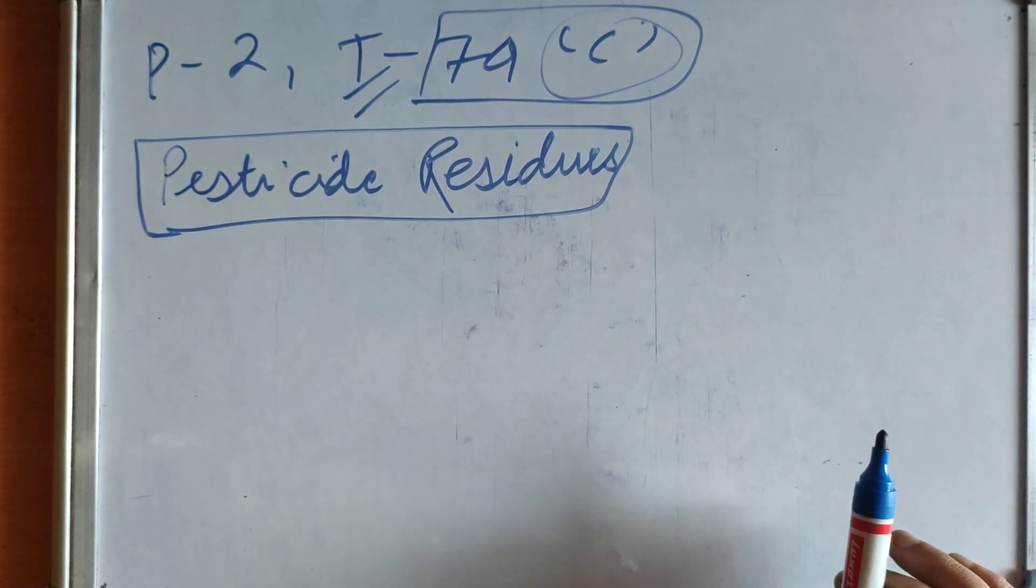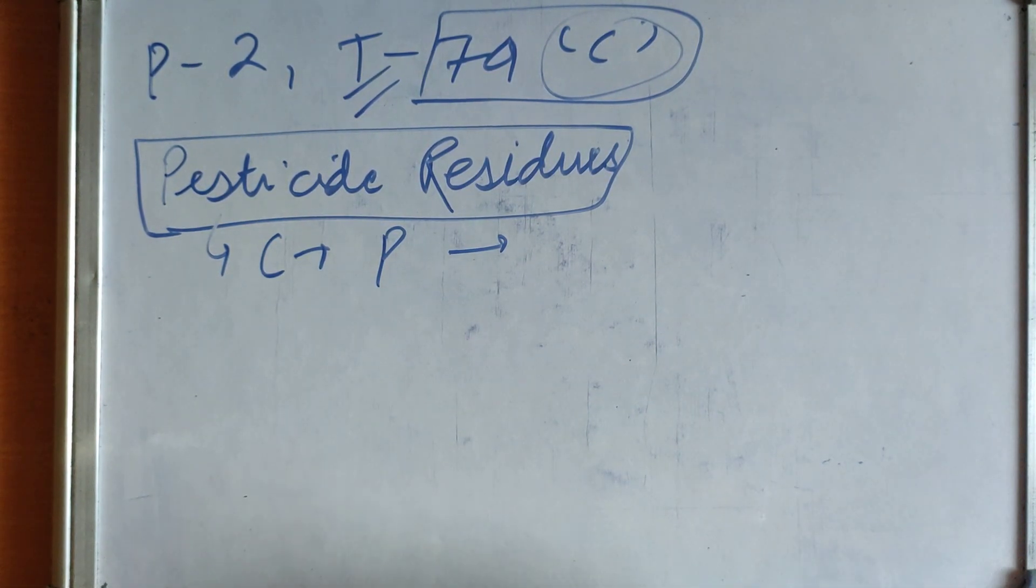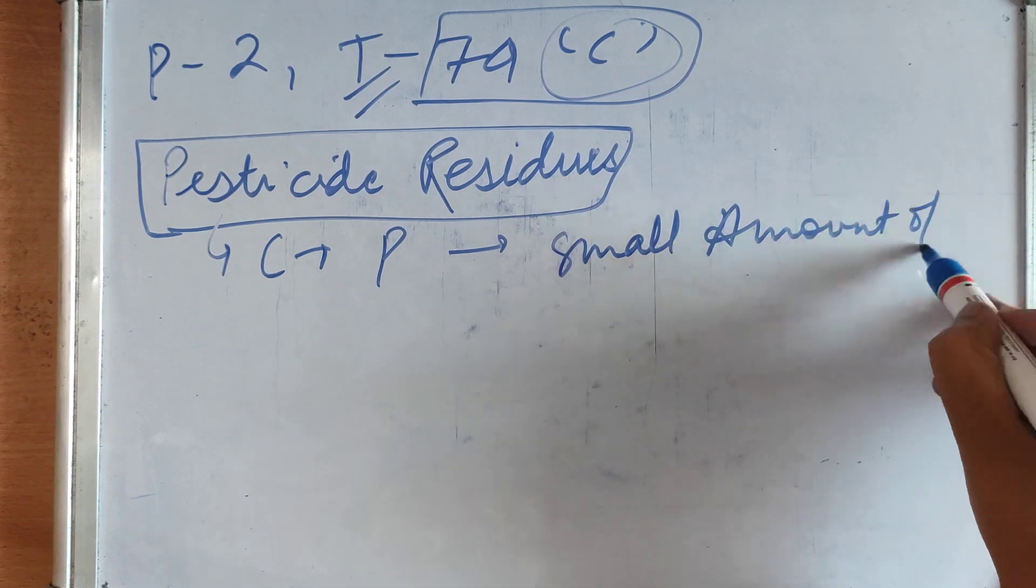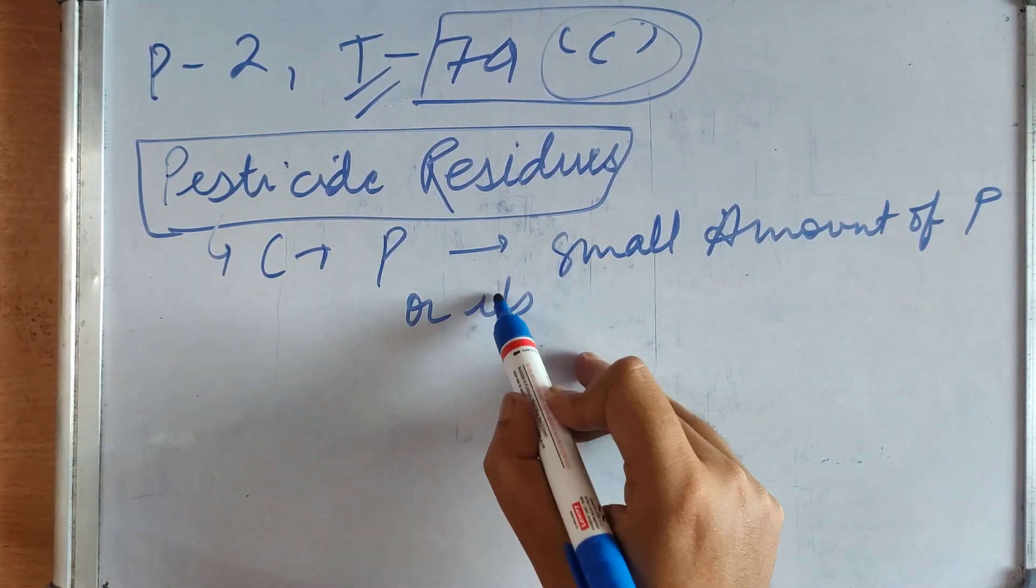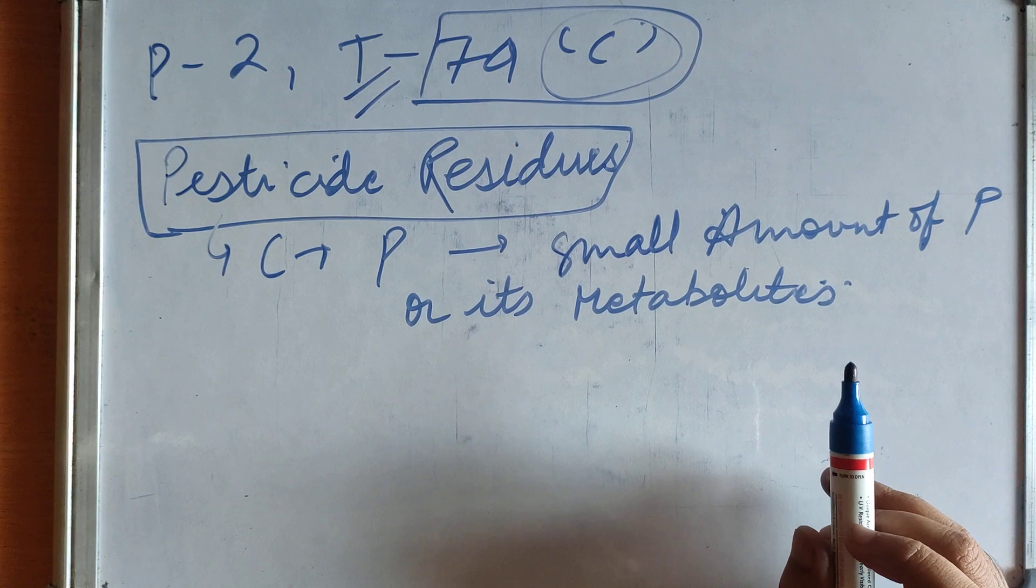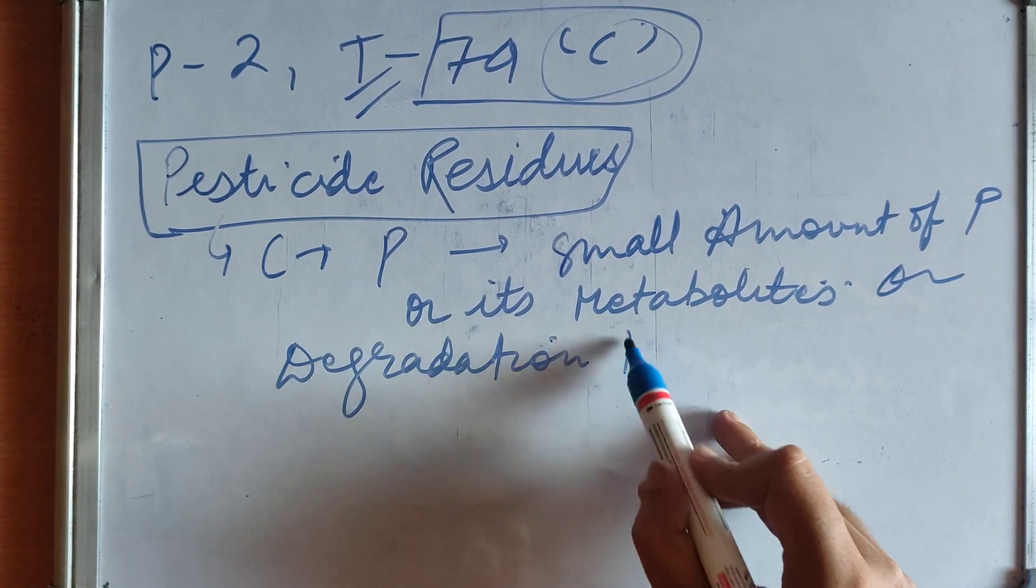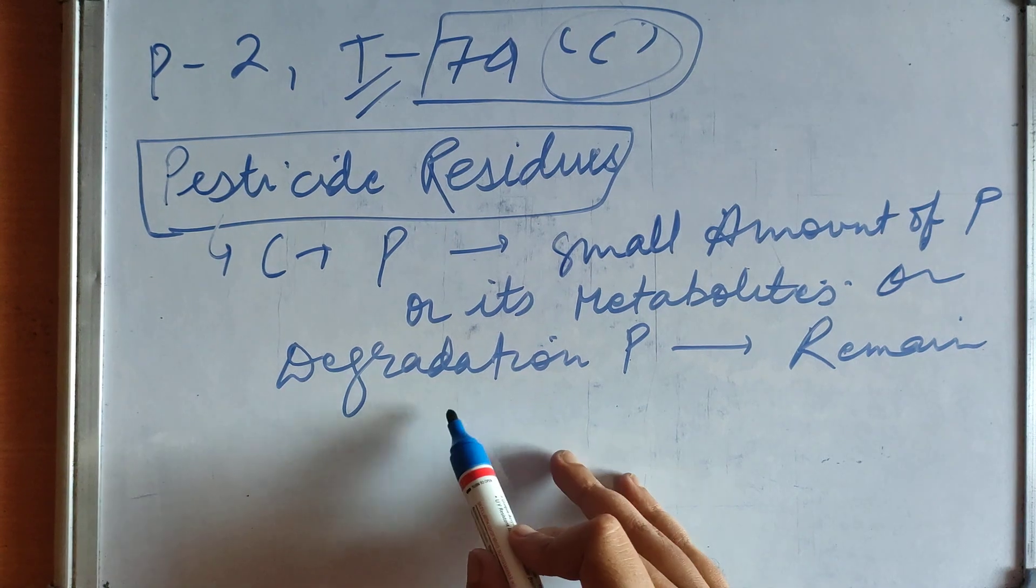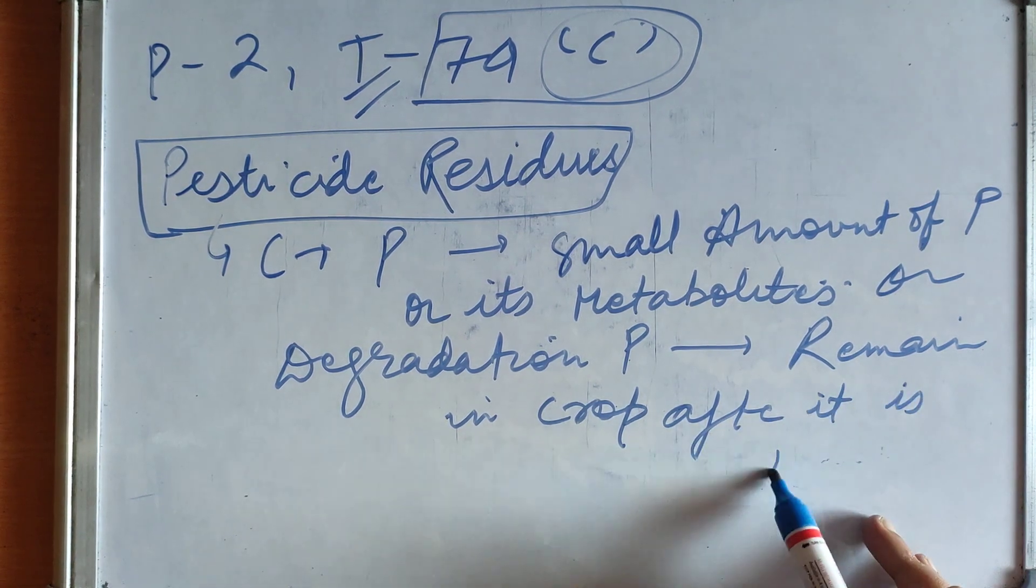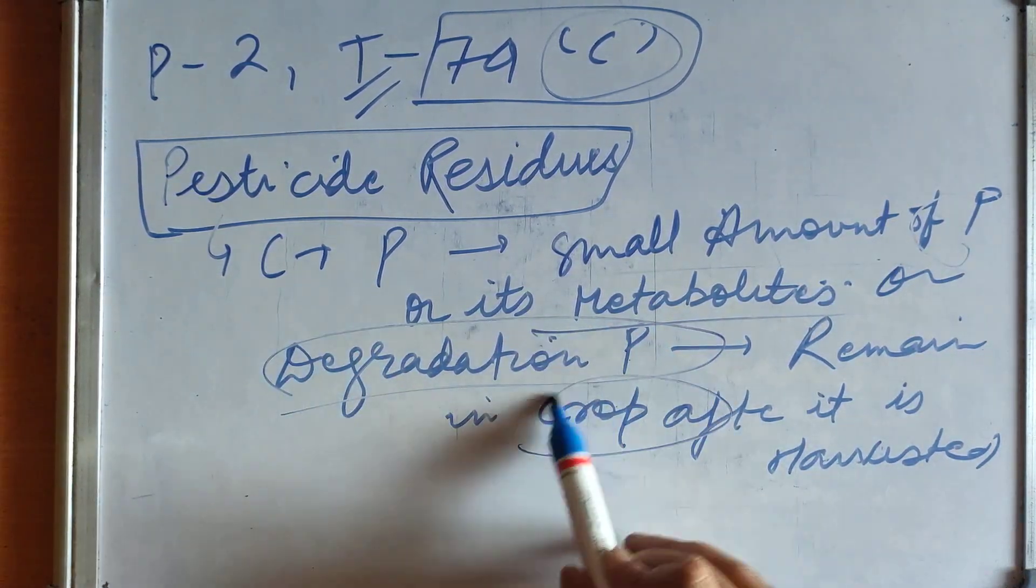Pesticide residues. When crop is treated with pesticide, a very small amount of pesticides or its metabolites or degradation products can remain in the crop after it is harvested also. So this small amount of metabolites, pesticides or its degradation product can remain in crop and this is what residue is, pesticide residue.